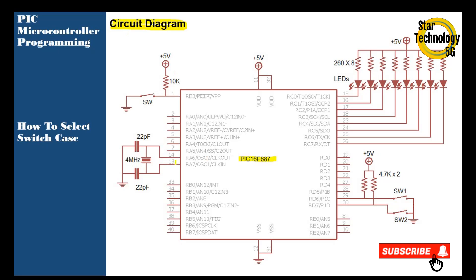Here is the circuit diagram. The PIC16F887 pin number 14 and 13 are interfaced with the crystal — we are using a 4 MHz crystal and 22 pF capacitors. Here is the reset circuit; the value of the resistor is 10k. When we press the switch the microcontroller gets reset.